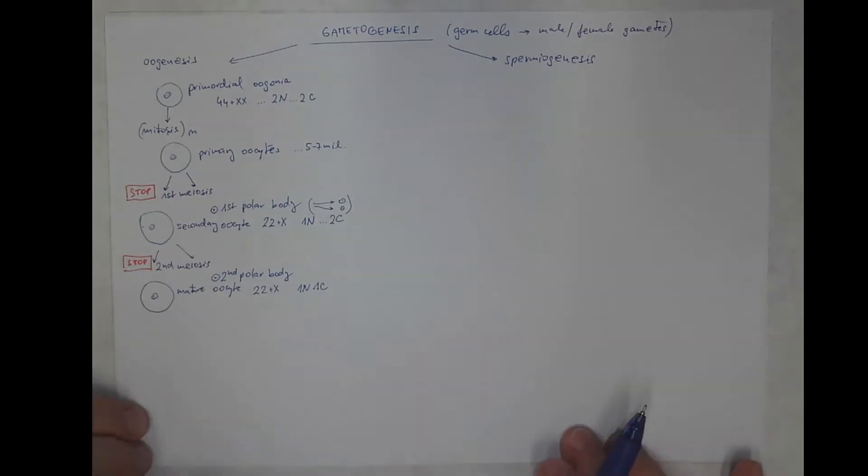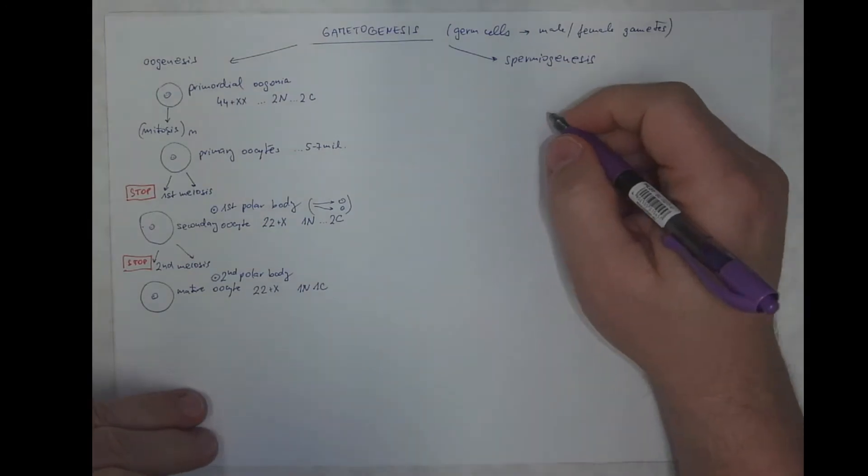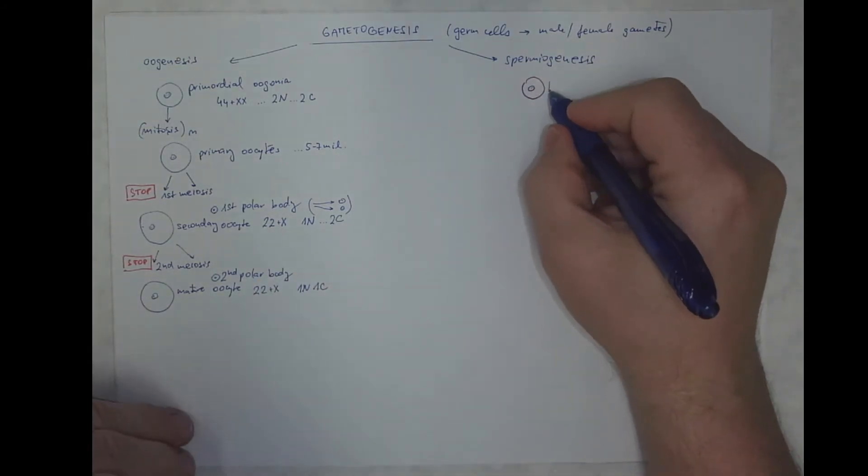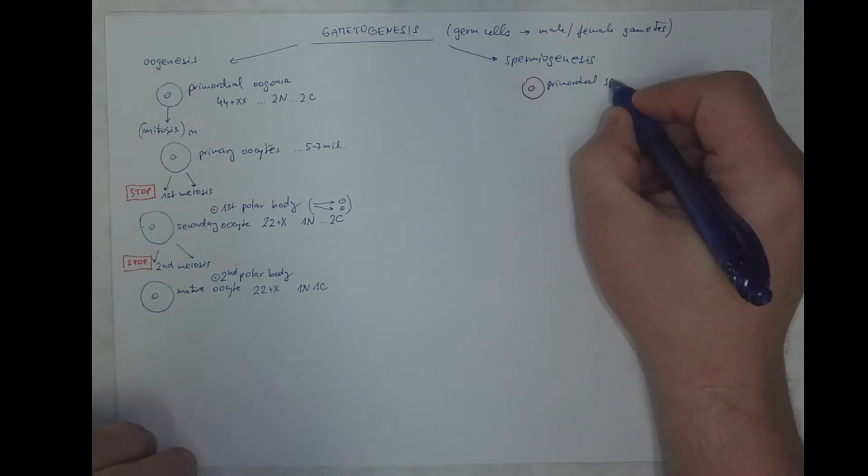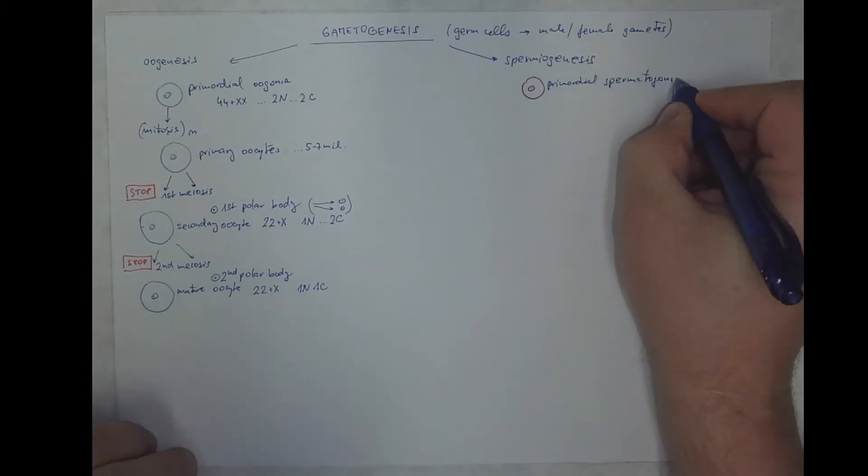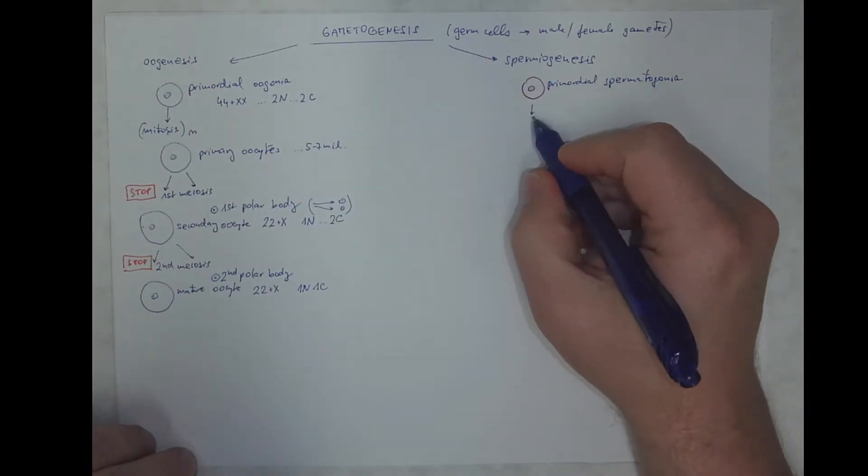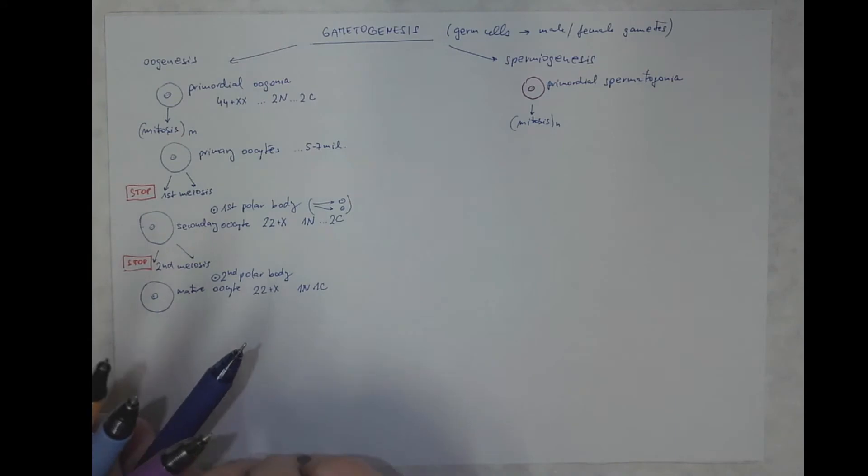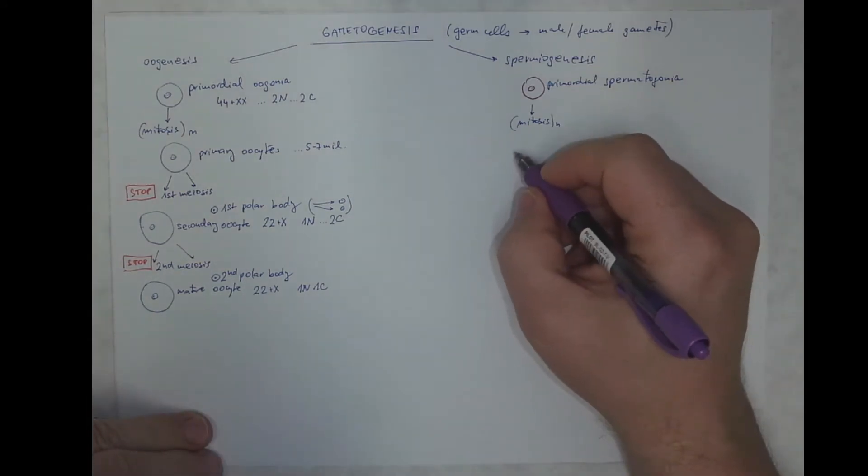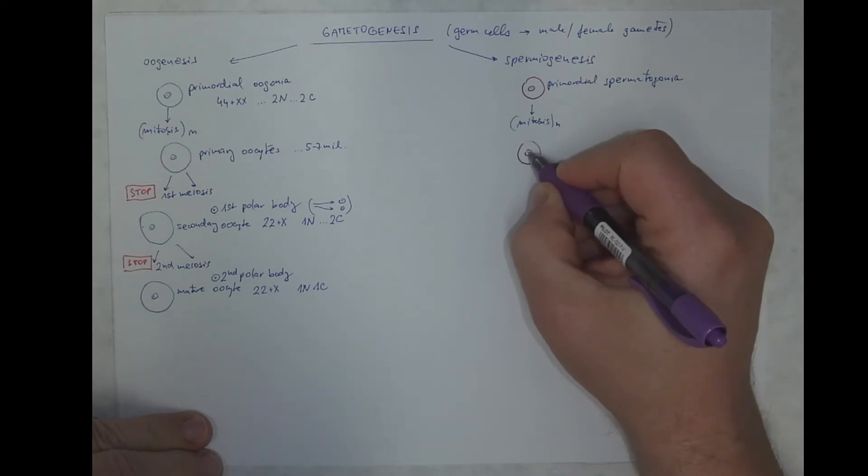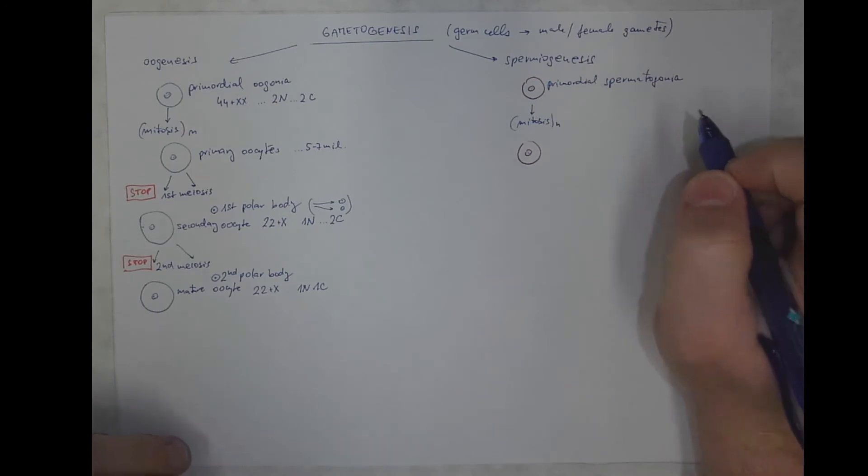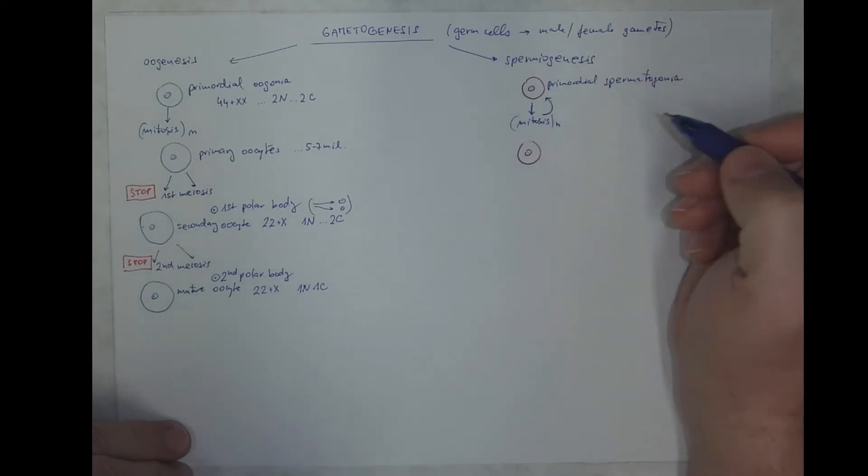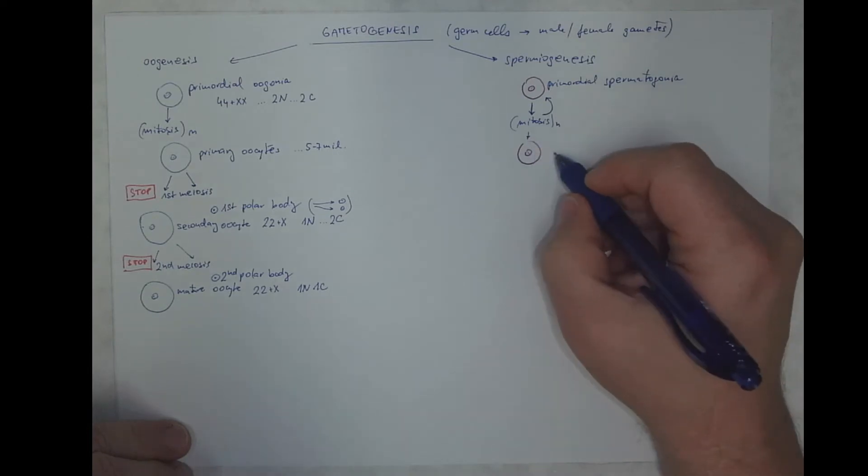Let's compare it with spermiogenesis. It starts with primordial spermatogonia, and similarly, they are entering repeated mitotic divisions, becoming primary spermatocytes. By the way, these cells have a self-renewing population of stem cells, actually. But those that differentiate become primary spermatocytes.